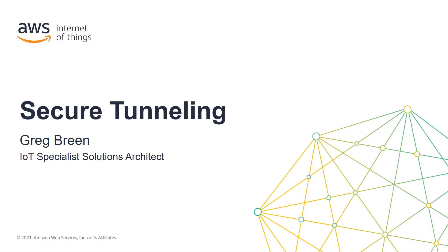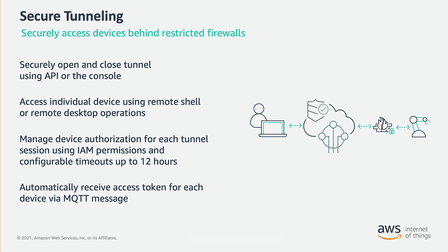Hi, and welcome to Getting Started with Secure Tunnelling. My name is Greg Breen, and I'm an IoT Specialist Solutions Architect with AWS. In this video, we'll cover Secure Tunnelling, a feature of AWS IoT Device Management. When devices are deployed behind firewalls at remote sites, you often need a way to gain access to those devices for troubleshooting, configuration updates, and other operational tasks. Secure Tunnelling helps customers establish bi-directional communication to remote devices over a secure connection that is managed by AWS IoT. Secure Tunnelling does not require updates to your existing inbound firewall rules, so you can maintain your existing security level.